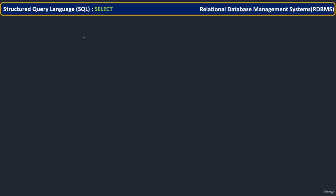On the database, what are all the operations we can perform? You can select the data, you can insert the data, you can update the data, or you can delete the data. These are the major operations you will perform on the database at any point of time. But out of all these operations, most of the times — 99% of the times — we will perform this SELECT command, retrieving the data from the database.